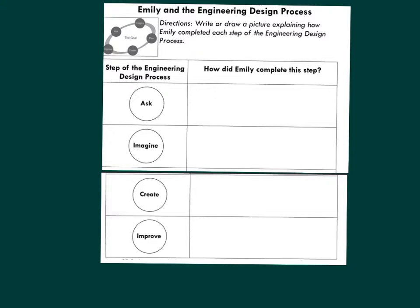Emily and the Engineering Design Process. Directions: write or draw a picture explaining how Emily completed each step of the engineering design process. On the left column is the step — Ask, Imagine, Create, Improve — and on the right, how did Emily complete this step?